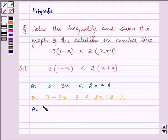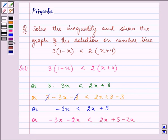After simplification we have minus 3x is less than 2x plus 5. On subtracting 2x from both the sides we have minus 3x minus 2x is less than 2x plus 5 minus 2x.